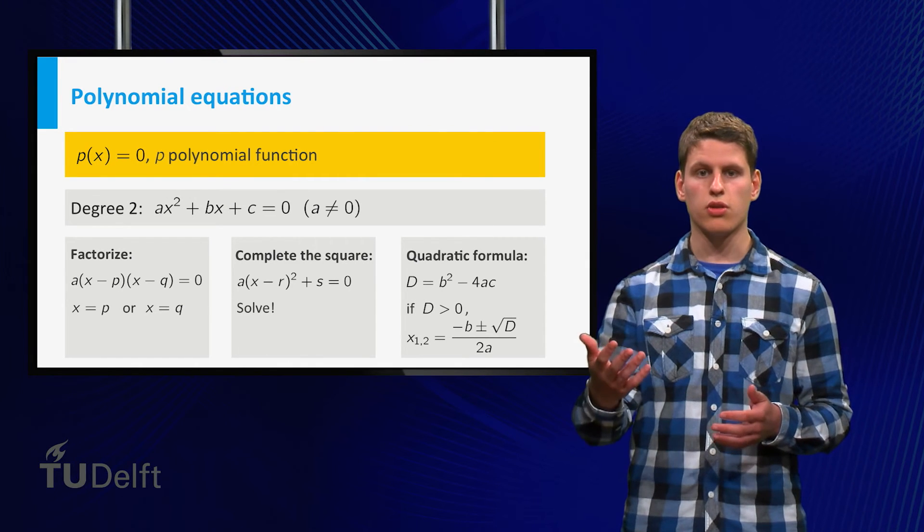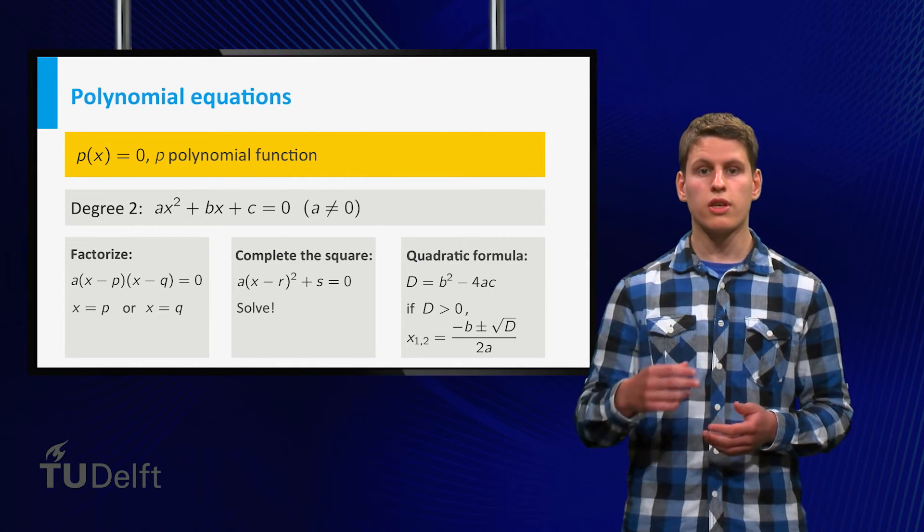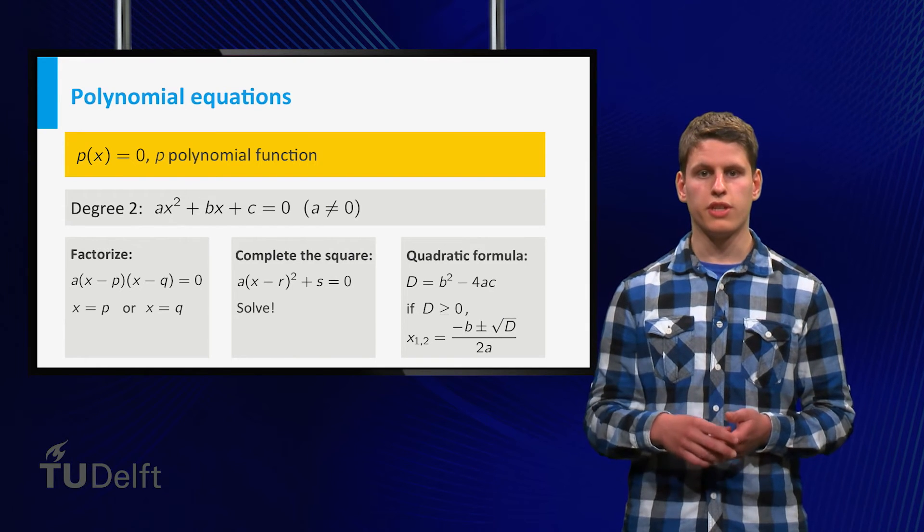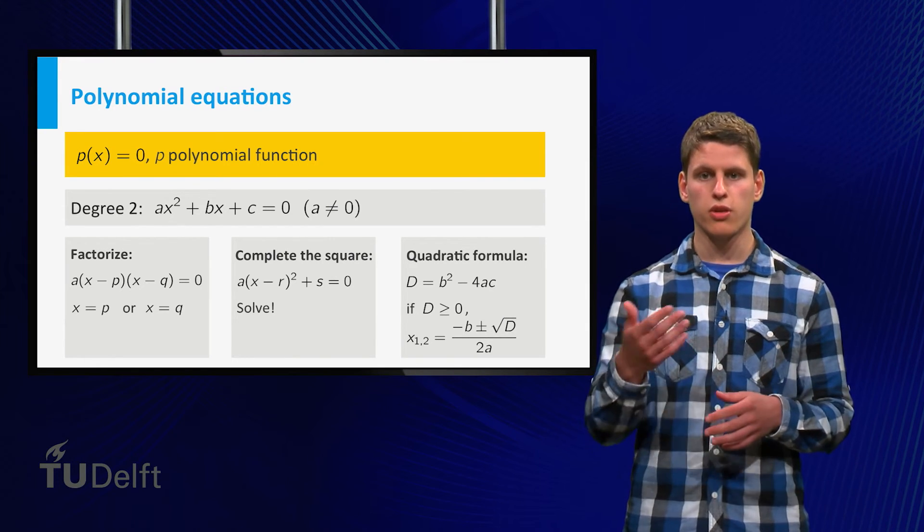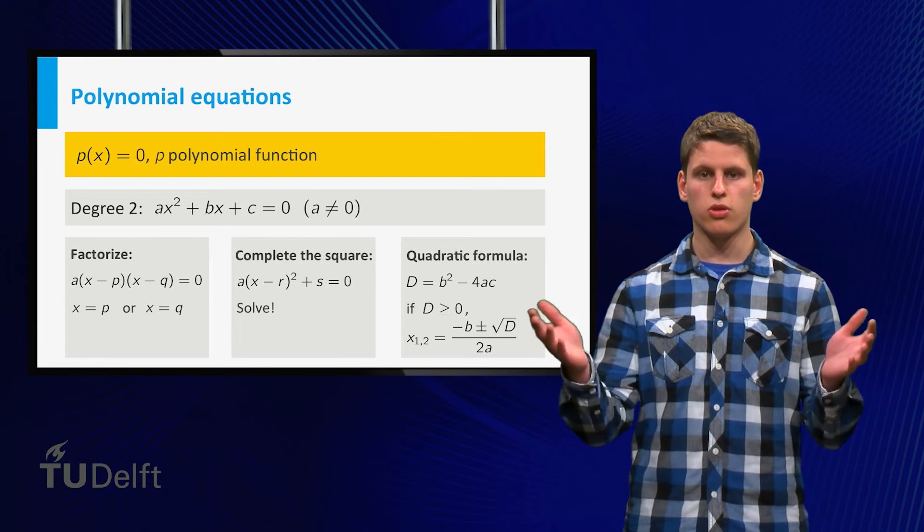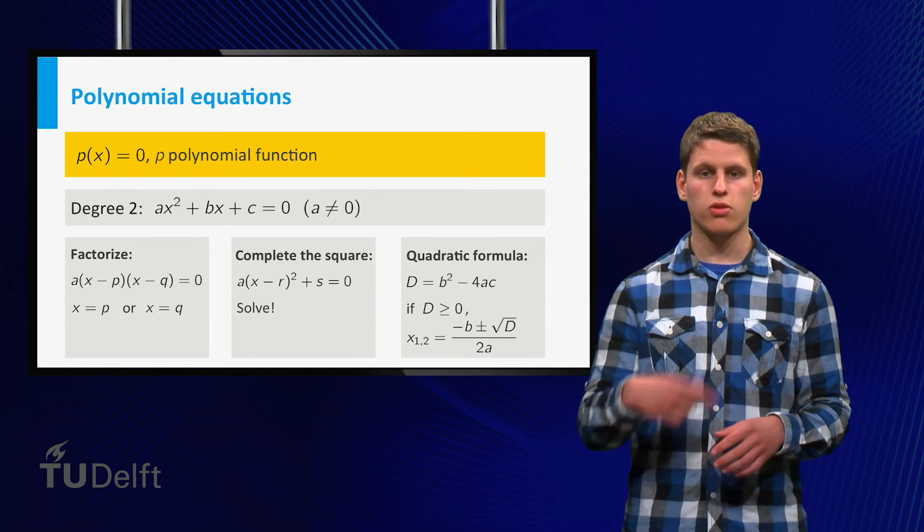If d is larger than zero, there are two solutions, given by the quadratic formula. For d equal to zero, you can still use this formula, but then the solutions coincide. So then there is only one solution.